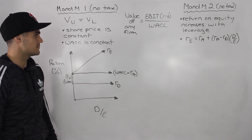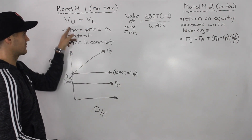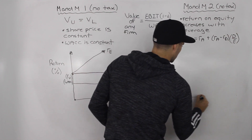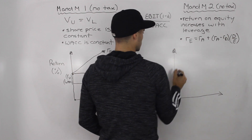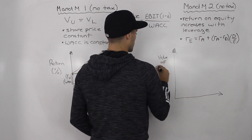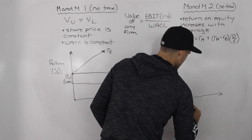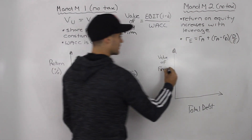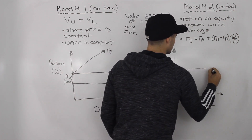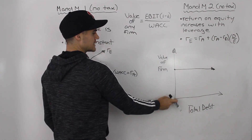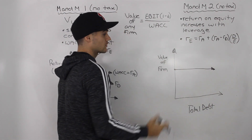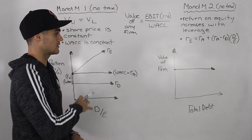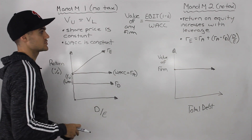I'm also going to introduce just one more graph — a super simple one — showing that the value of an unlevered firm equals the value of a levered firm. The y-axis will be the value of the firm and the x-axis will be total debt, which you can also label as the debt to equity ratio. This graph is simply a straight horizontal line: the value of the unlevered firm when debt is zero equals the value of any other levered firm. So these two graphs — write them both down, and we'll be constantly referring to this summary when doing future questions.